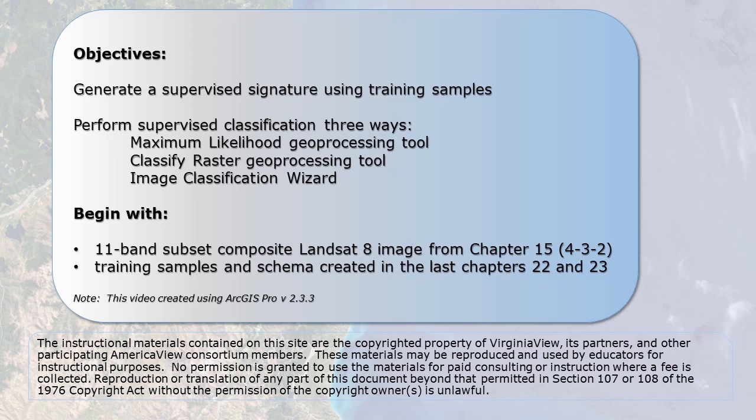Begin with the 11-band composite Landsat 8 image created in Chapter 15, set to natural color, and the training sample shapefile created in Chapter 23, symbolized to match our information classes.